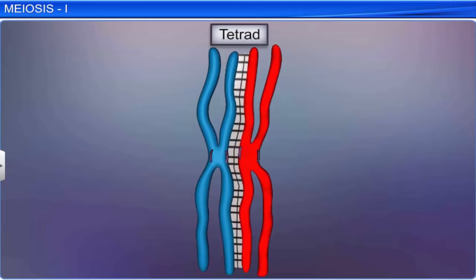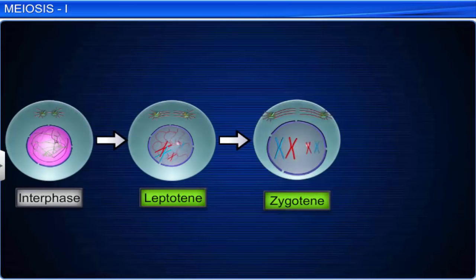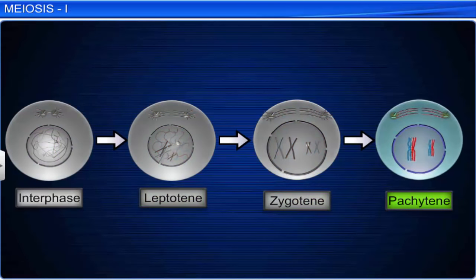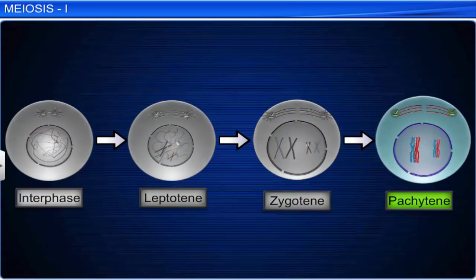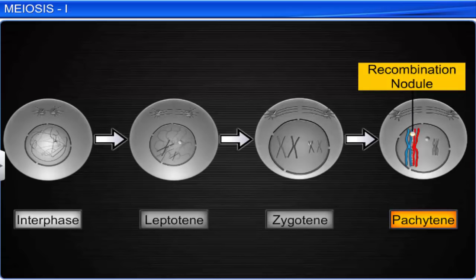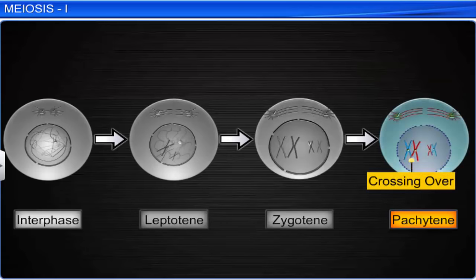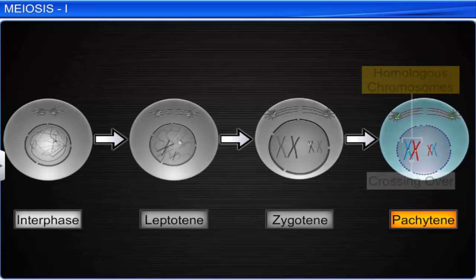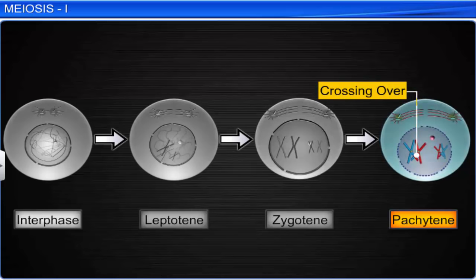The zygotene stage is followed by the pachytene stage, during which the bivalent chromosomes are clearly visible as tetrads. Moreover, large protein complexes on the synaptonemal complex, called recombination nodules, begin to appear. These nodules are believed to be the sites where crossing over occurs. Crossing over is an event unique to meiosis, wherein an exchange of genetic material occurs between the non-sister chromatids of homologous chromosomes. The process of crossing over is initiated by the enzyme recombinase and results in the recombination of genetic material between the two chromosomes.